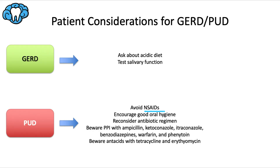If you absolutely have to use an NSAID, opt for a COX-2 selective inhibitor like celecoxib (brand name Celebrex); otherwise, use acetaminophen as the alternative analgesic. Consider good oral hygiene — especially here, because H. pylori is a bacterium that can harbor itself in dental plaque, so keeping teeth clean can help prevent its spread. Antibiotics taken for H. pylori should keep dental infections in check, but if the patient needs another antibiotic for a tooth issue, select a different class to avoid doubling up on dosing.